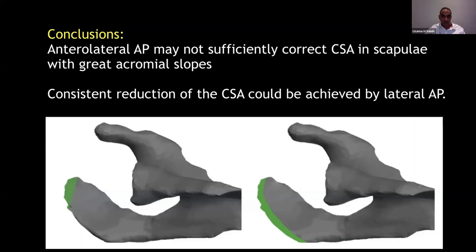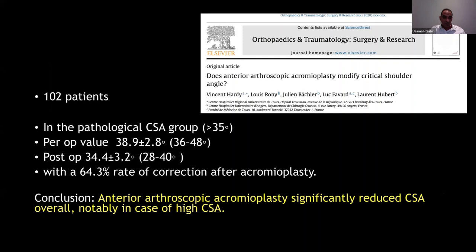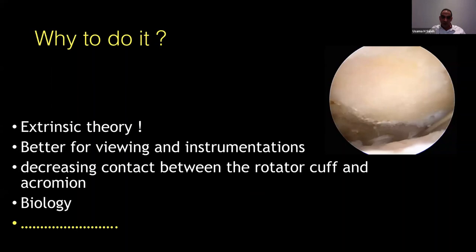However, two studies from France — one in 2009 and one in 2020 — looked retrospectively at their patients and found that standardized anterolateral acromioplasty also significantly reduced and normalized the high critical shoulder angle. The group of Luc Favard also found that anterior arthroscopic acromioplasty significantly reduced the critical shoulder angle. So we can add to our reasons for antero-inferior acromioplasty that it does correct the high critical shoulder angle according to evidence from two centers.